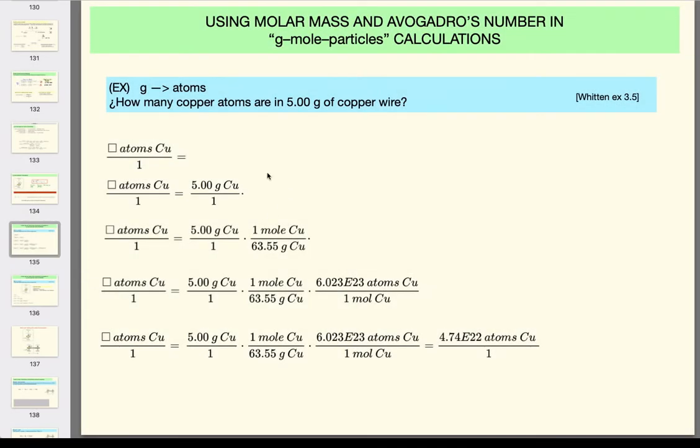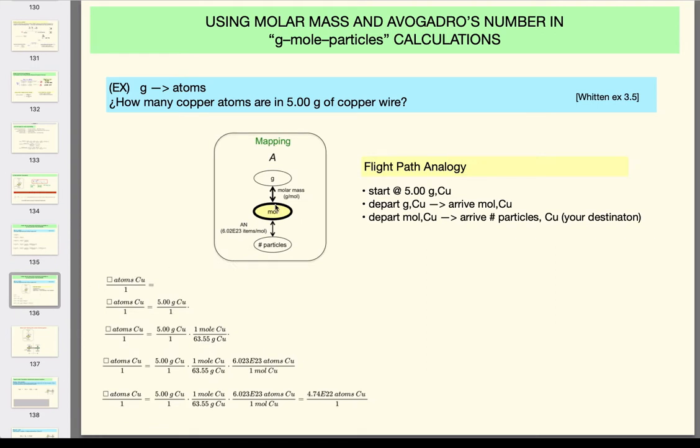Let's now analyze the problem that we just worked through step by step and let me overlay that with the mapping process. So what we did was we took the box and the star, the box being the answer that you're looking for and the star being the point at which you start. We can see that the grams of copper wire was given, that's the star, and where we're headed for is how many, that's the number of particles.